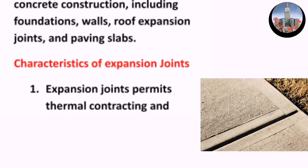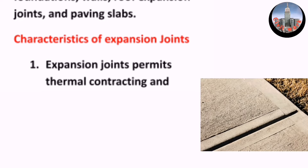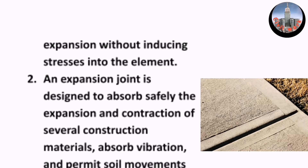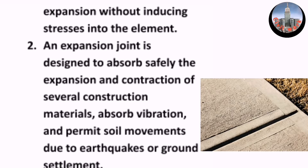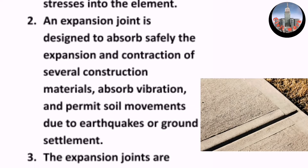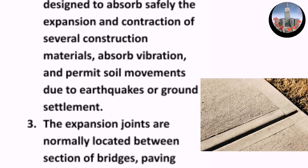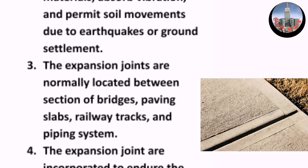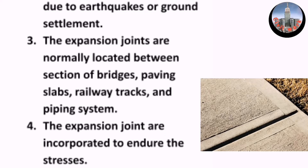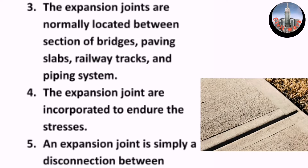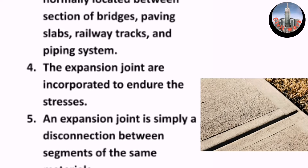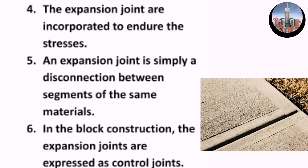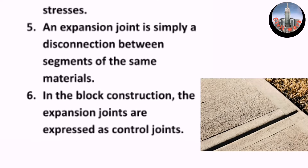Characteristics of expansion joints: One, expansion joints permit thermal contracting and expansion without inducing stresses into the element. Two, an expansion joint is designed to absorb safely the expansion and contraction of several construction materials, absorb vibration, and permit soil movements due to earthquakes or ground settlement. Three, expansion joints are normally located between sections of bridges, paving slabs, railway tracks, and piping systems. Four, expansion joints are incorporated to endure stresses. Five, an expansion joint is simply a disconnection between segments of the same materials.